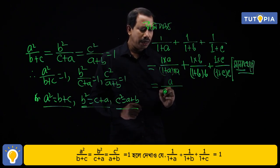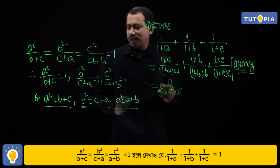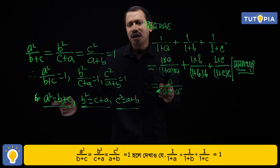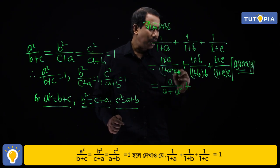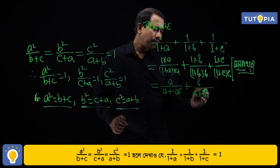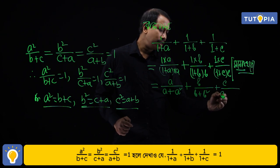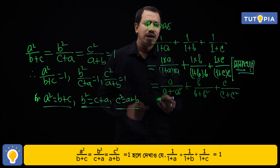This question becomes: a/(a + a²) + b/(b + b²) + c/(c + c²).